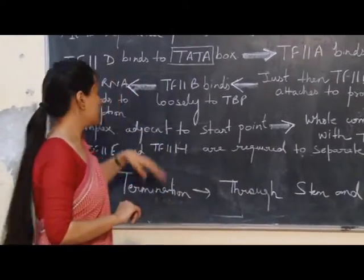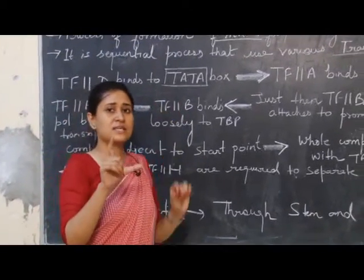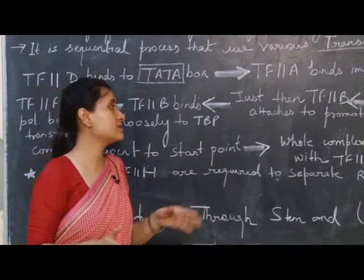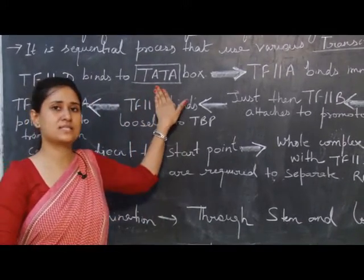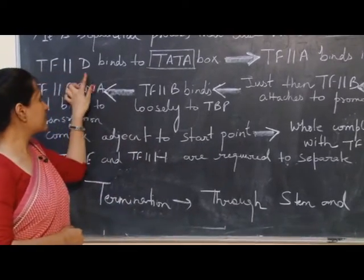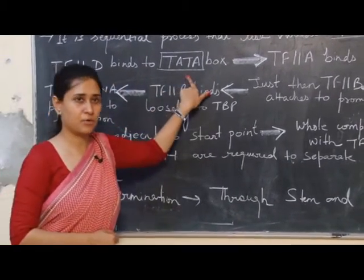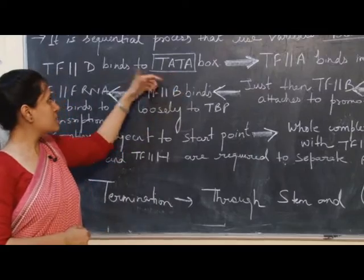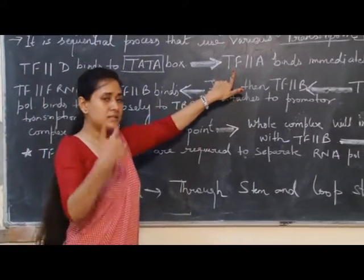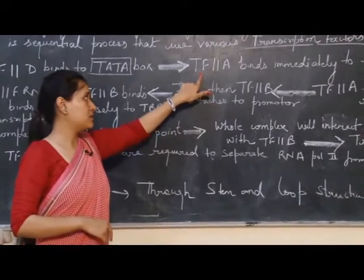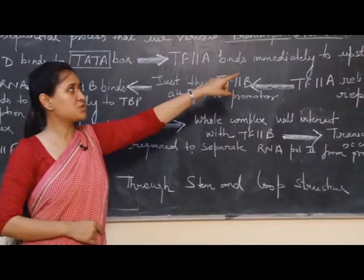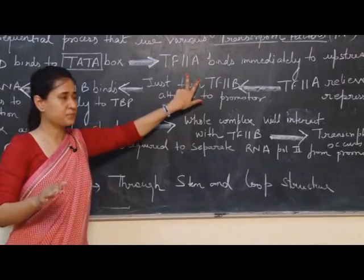So first of all, what happens? There is a site called the initiation site, and just adjacent to that initiation site, there is a box which is called the TATA box. First of all, transcription factor D will bind to that TATA box. And then just after the binding to this TATA box, another transcription factor will come and bind — this is transcription factor A. It will bind immediately upstream to TfD. That is the second step.